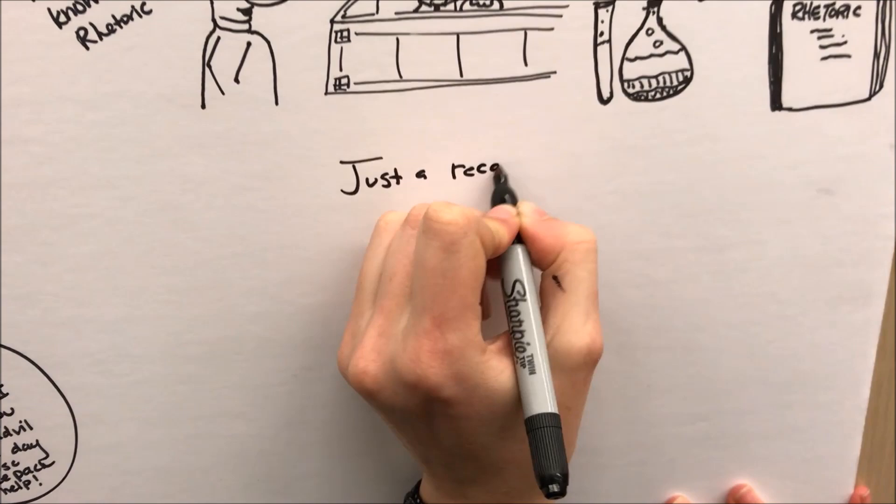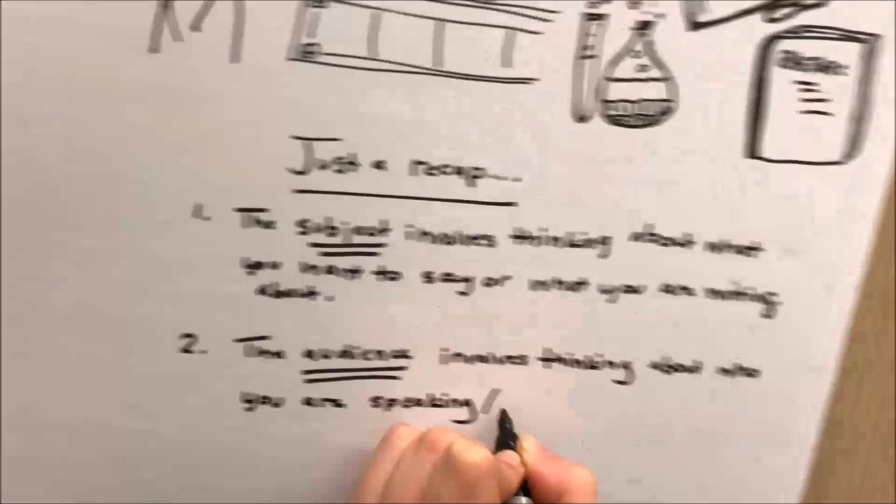Just to recap, the subject involves thinking about what you want to say and what you are writing about. The audience involves thinking about who you are writing to or speaking to. The speaker involves thinking about how you are portraying yourself as an author.